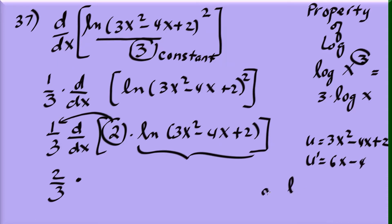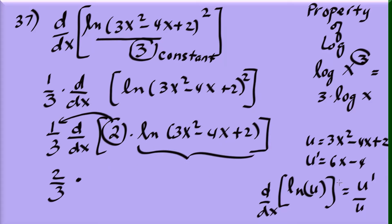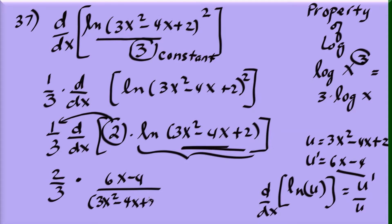Applying the derivative formula for natural log of u — u prime over u — the derivative of natural log of (3x squared minus 4x plus 2) is (6x minus 4) divided by (3x squared minus 4x plus 2). All that remains is simplifying: multiply two-thirds by (6x minus 4) over (3x squared minus 4x plus 2).